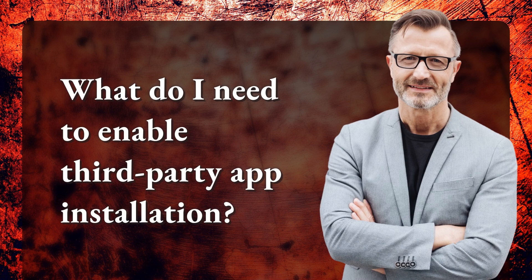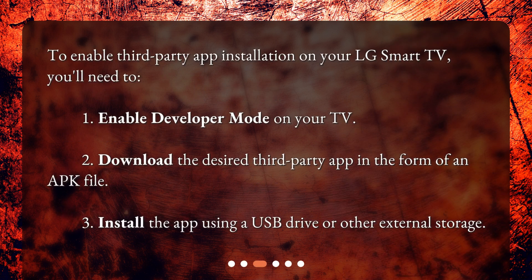What do I need to enable third-party app installation? To enable third-party app installation on your LG Smart TV, you'll need to: 1. Enable developer mode on your TV. 2. Download the desired third-party app in the form of an APK file. 3. Install the app using a USB drive or other external storage.